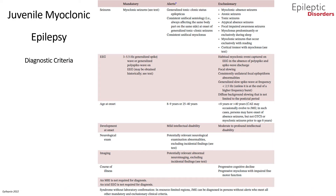The diagnostic criteria for juvenile myoclonic epilepsy: mandatory criteria include myoclonic seizures and an EEG showing 3 to 5.5 Hz generalized spike or poly spike and wave discharges. Alerts suggesting an alternative diagnosis include generalized tonic-clonic status epilepticus, consistent unifocal semiology, consistent unifocal myoclonus, and an age of onset between 8 to 9 years or 25 to 40 years. Exclusionary criteria include seizure types other than myoclonic seizures, and a habitual myoclonic event captured on EEG without poly spike and wave discharges.